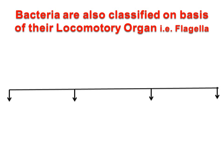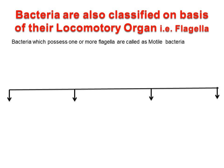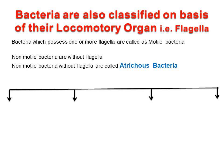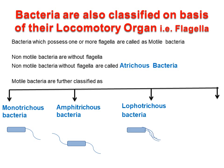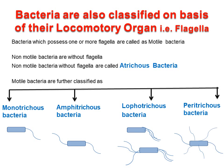Bacteria are also classified on the basis of their locomotory organ, i.e., flagella. Bacteria which possess one or more flagella are called motile bacteria, and non-motile bacteria are without flagella — called atrichous bacteria. Motile bacteria are further classified as: Monotrichous — bacteria having a single flagellum at one end of the cell; Amphitrichous — bacteria having a single flagellum at both ends of the cell; Lophotrichous — bacteria having a bundle or tufts of flagella at one or both ends of the cell; Peritrichous — bacteria having flagella all over the cell surface.